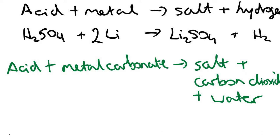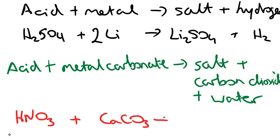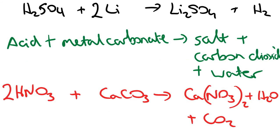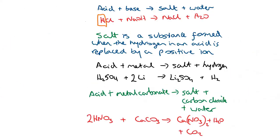The third reaction is acid plus a metal carbonate, giving a salt, carbon dioxide, and water. For example, HNO3 plus calcium carbonate (CaCO3): the hydrogen is replaced by the metal, so we form calcium nitrate (Ca2+ requires two NO3− ions), plus water and carbon dioxide. Balancing gives us two HNO3 molecules. So those are the three reactions of acids that we need to know.